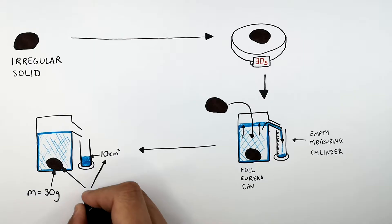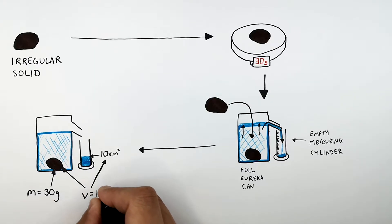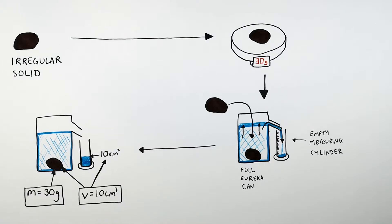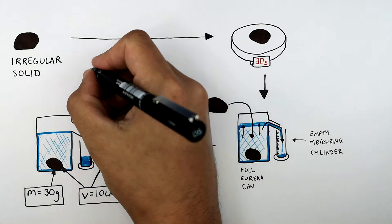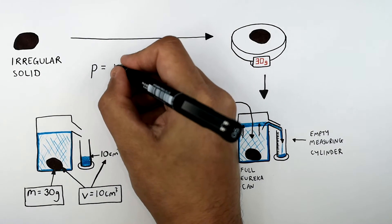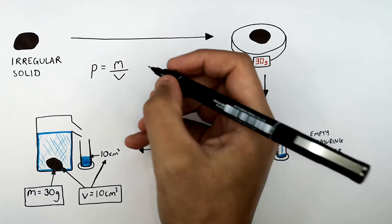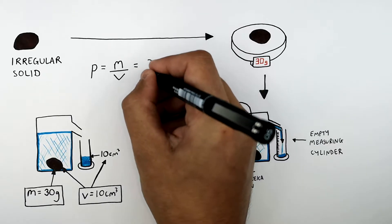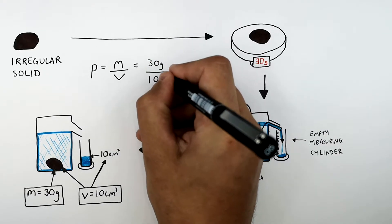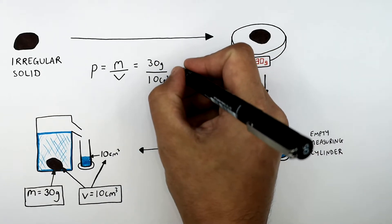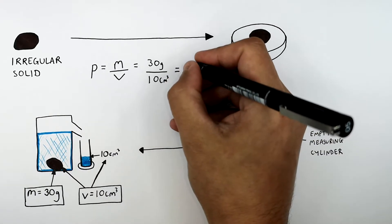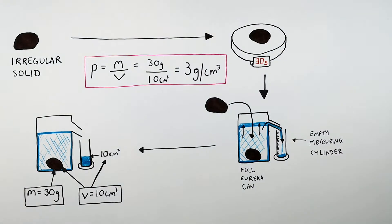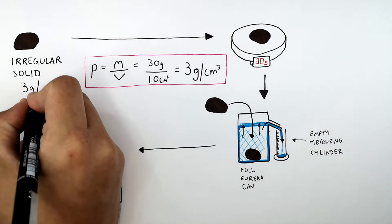The volume of the irregular shaped solid is 10 centimetres cubed. So to work out the density of this irregular shaped solid, you recall the equation: density p equals mass m divided by volume v. You can substitute the numbers — 30 grams divided by 10 centimetres cubed gives you a density of 3 grams per centimetre cubed.